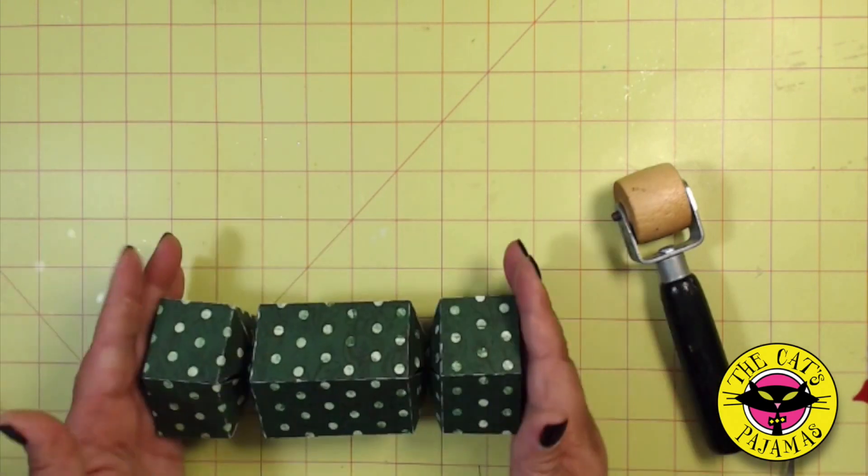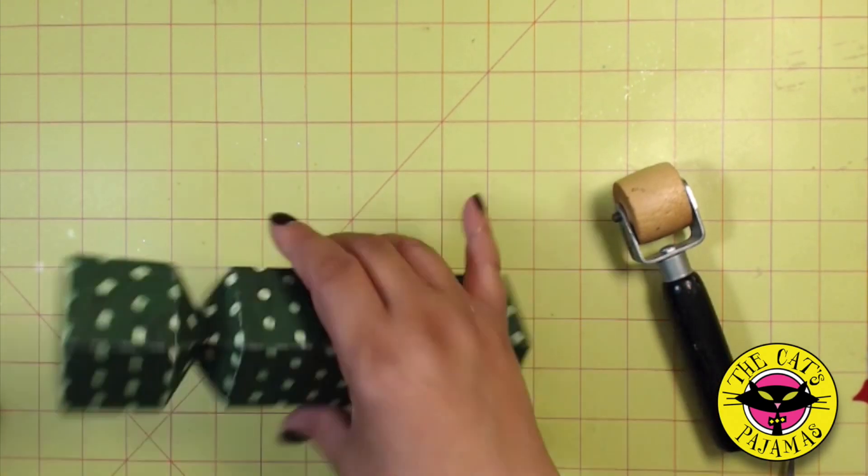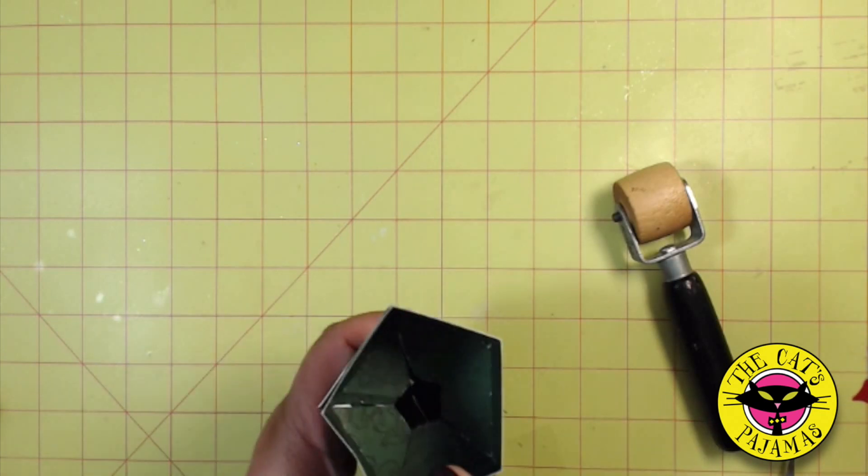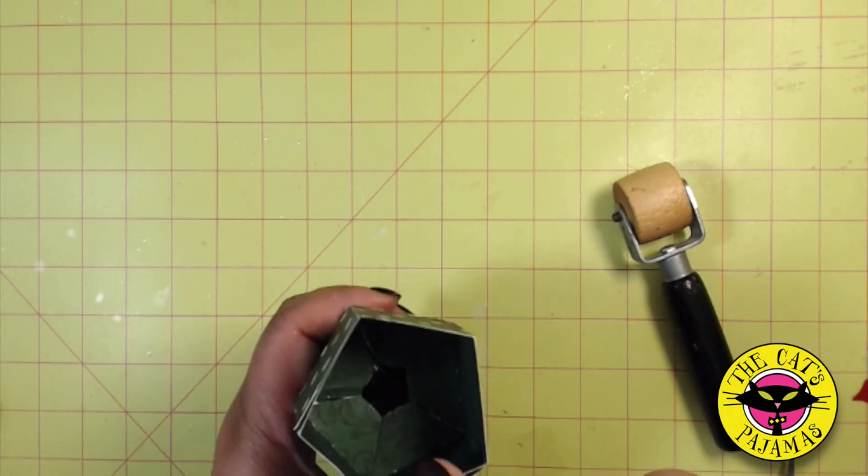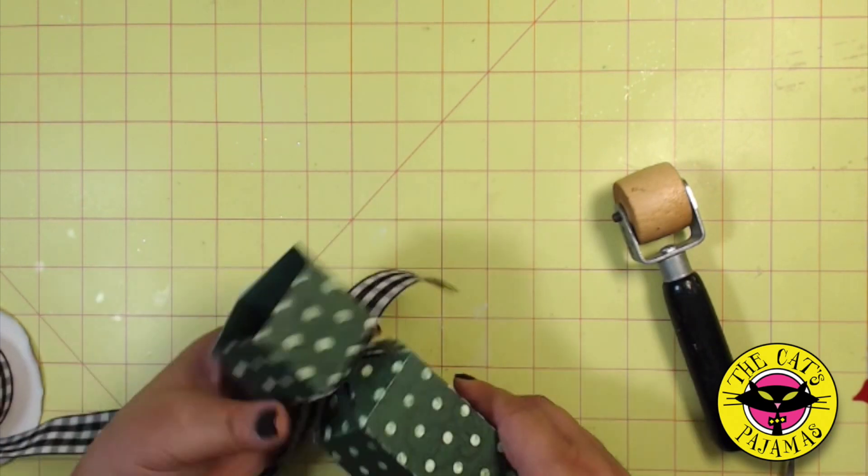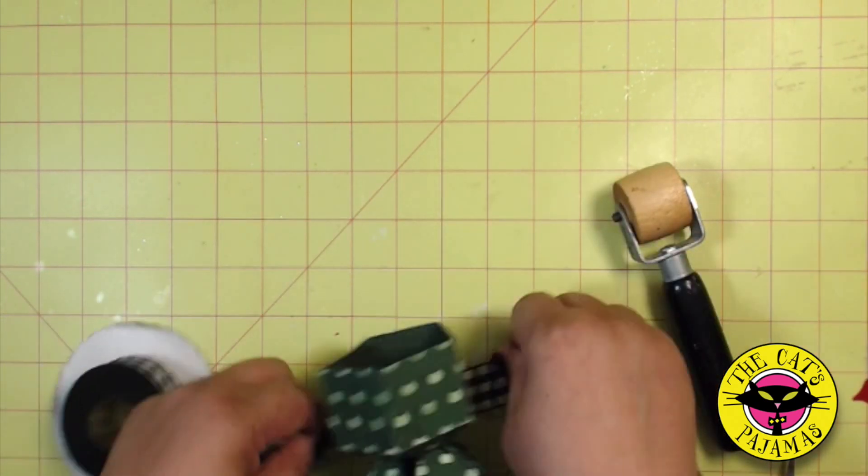Then squeeze the ends together and that's it. It'll have about a one and a half inch hole at the end, so whatever you place in the cracker will have to cover the hole or be large enough so it doesn't go through the hole.